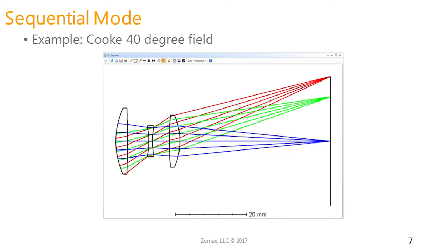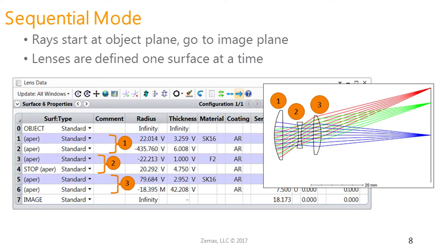We're going to start by talking about sequential mode with a simple example — a screenshot of a Cook triplet. All files opened throughout this webinar will be saved online in a zipped file. In sequential mode, rays start at the object plane and travel through to the image plane. Surface zero is always the object plane, and the last surface in the editor is the image plane. Lenses are defined one surface at a time — surfaces one and two make up the first lens, with surface one as the front and surface two as the back.